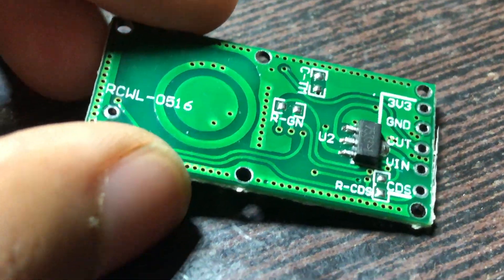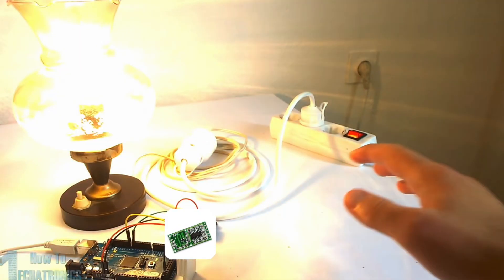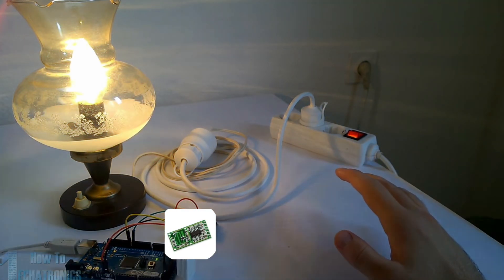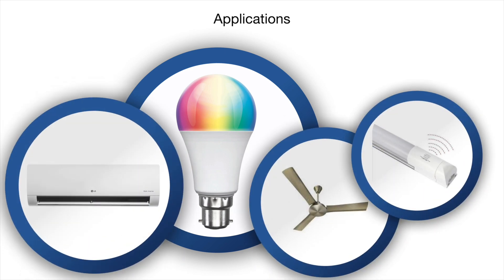Applications. Now this little beast has a ton of applications. The most basic superset of all these applications is that you can use it wherever you want to detect motion. For example, it may be bulbs, fans, lights, air conditioners, and a whole lot of things.